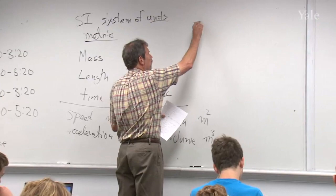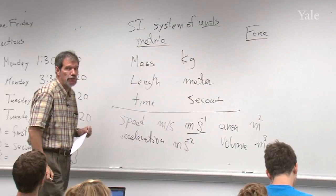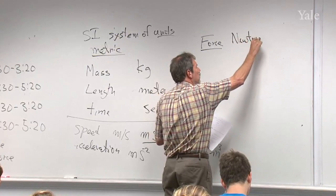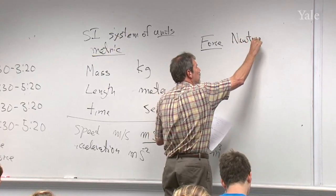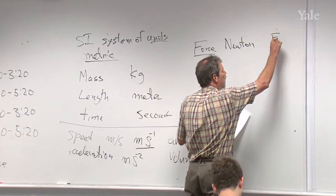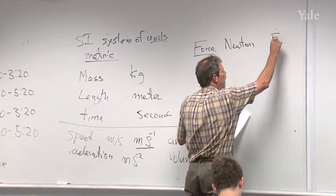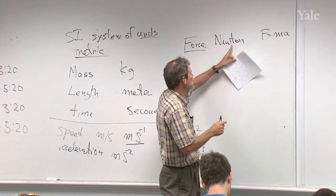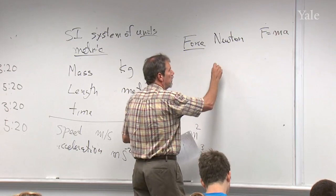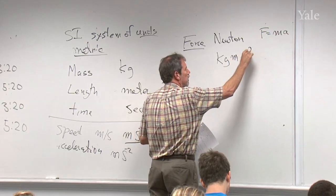Now let's move into ones that are a little trickier. The SI unit of force is the Newton, named after Sir Isaac, of course. It's not a fundamental unit — we can derive it. Using Newton's law F = ma, the unit of force, the Newton, can also be written as kilograms·meters per second squared (kg·m·s⁻²).